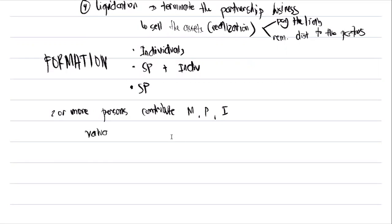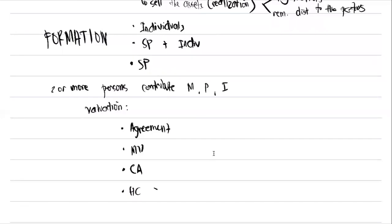To value a contribution, we follow a hierarchy. First, we value it based on the agreement — the agreed value of the investment. If there is no agreement, we value it based on market value. If there is no market value, we measure it at the carrying amount. And lastly, if there is no carrying amount, we use historical cost, though this rarely happens.